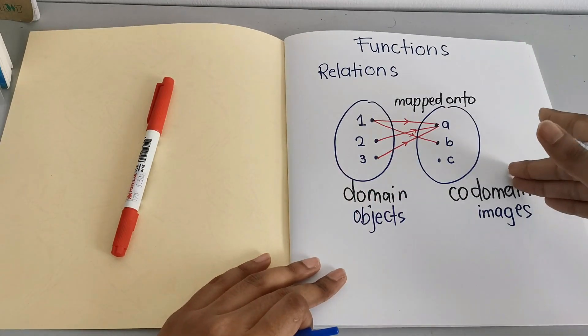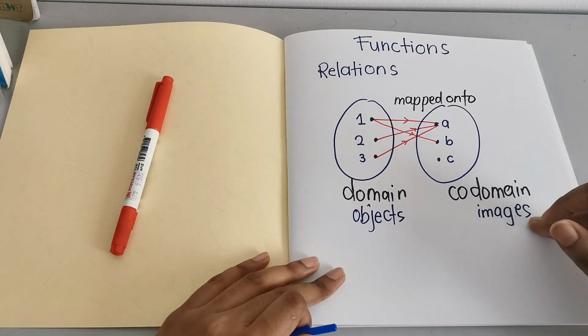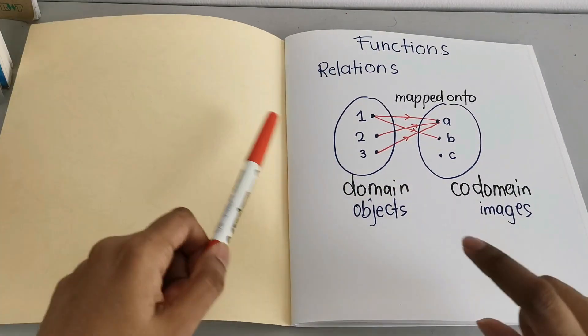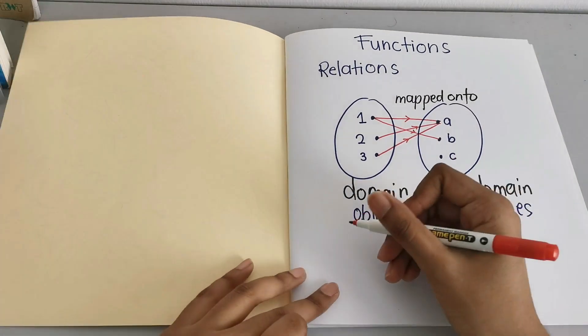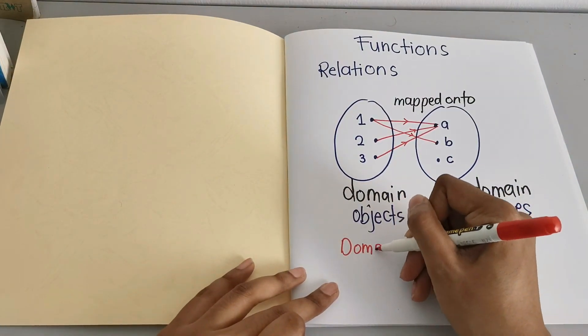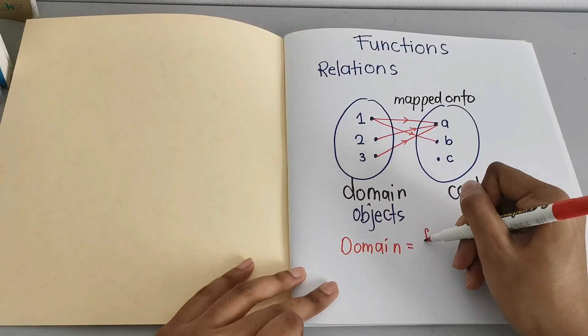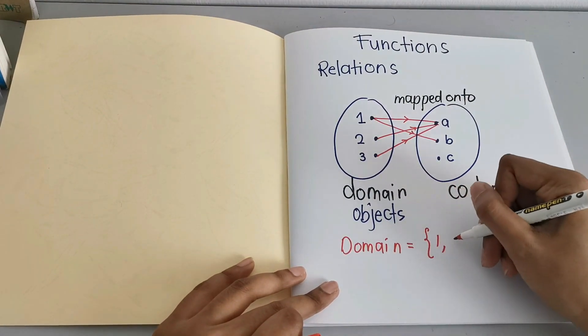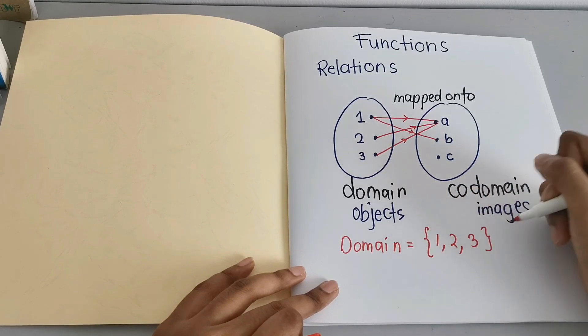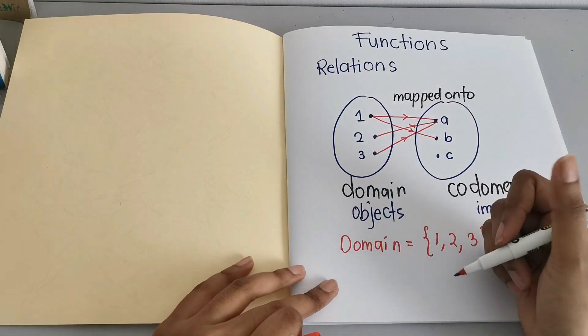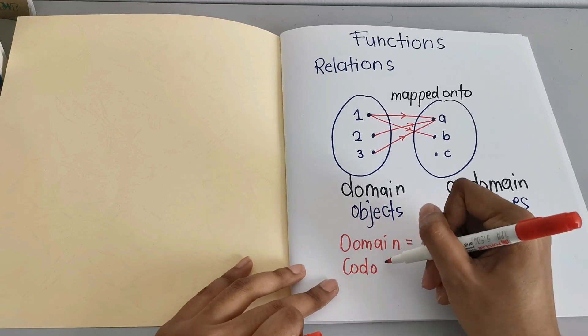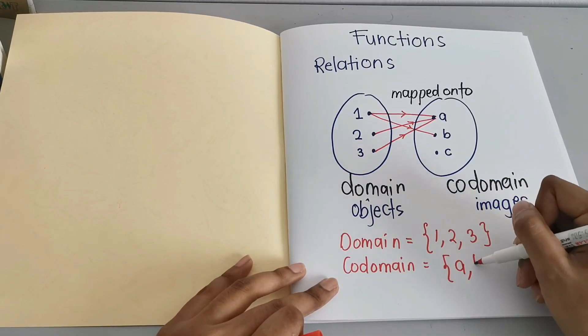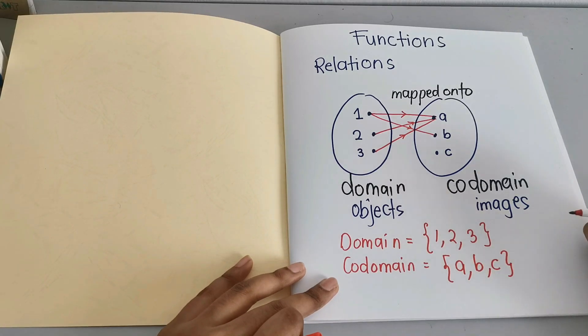So domain, codomain, objects, images. Now when we write down domain, we put curly bracket. Domain consists of 1, 2, and 3. So how about the codomain? The elements in codomain are A, B, and C.